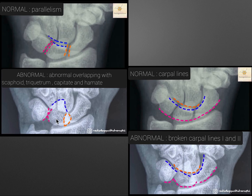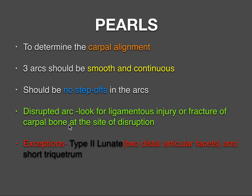In the abnormal case, the carpal arcs are crossing each other with some overlap — this is abnormal. The important points of Gilula's carpal arcs for determining carpal alignment: all three arcs should be smooth and continuous with no step-off. A disrupted arc should always prompt you to look for ligamentous injury, fracture, or dislocation.